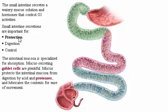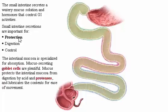The intestinal mucosa is specialized for absorption. Mucus-secreting goblet cells are plentiful. Mucus protects the intestinal mucosa from digestion by acid and proteases, and lubricates the contents for ease of movement.